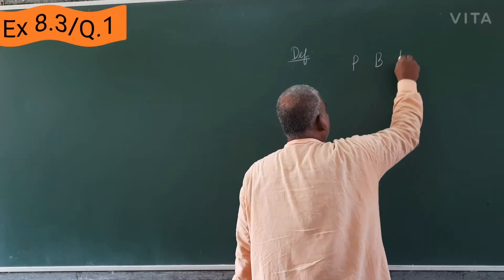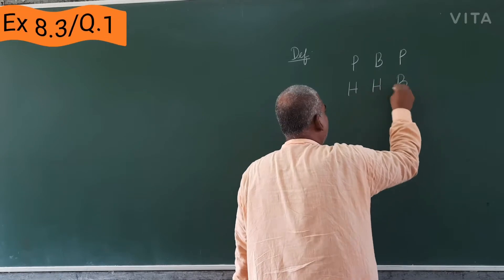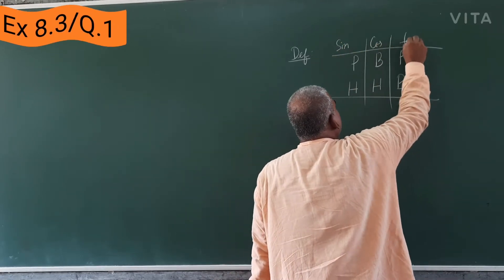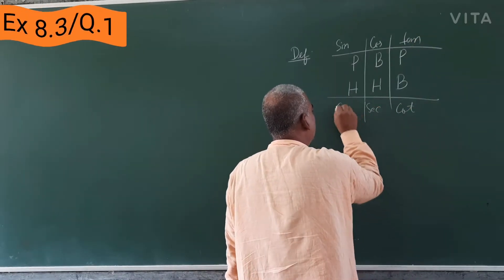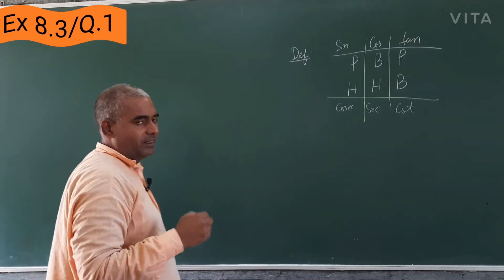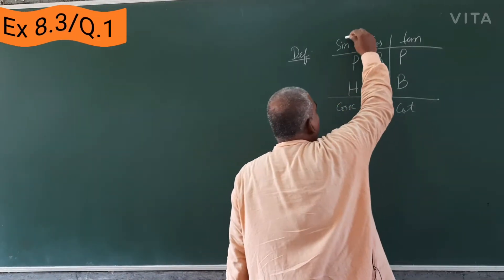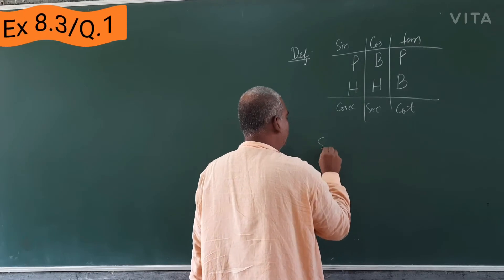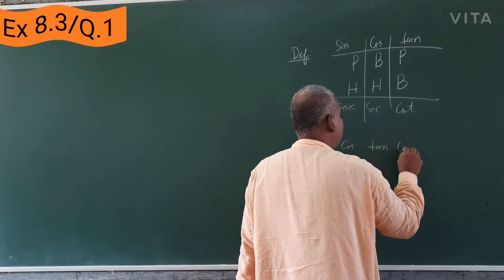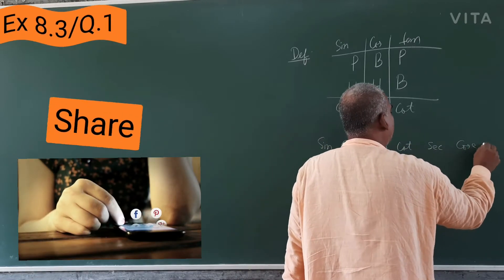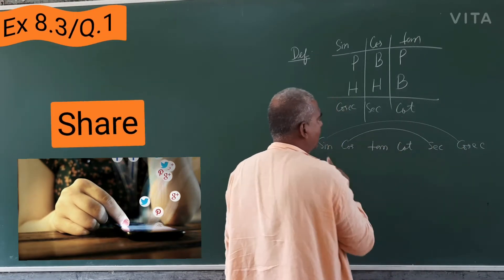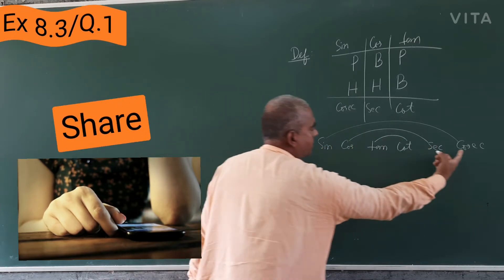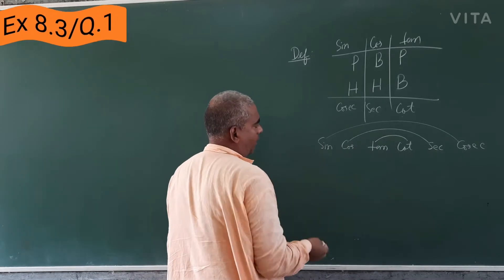The mnemonic I use is 'Pakistan Bhukha Piasa, Hindustan Hara Bhara' for sin, cos, tan, cot, sec, and cosec. Now, first and sixth are husband and wife: sin and cosec. Cos and sec are husband and wife. Tan and cot are husband and wife. Husband and wife means sine theta multiplied by cosec theta is equal to one.